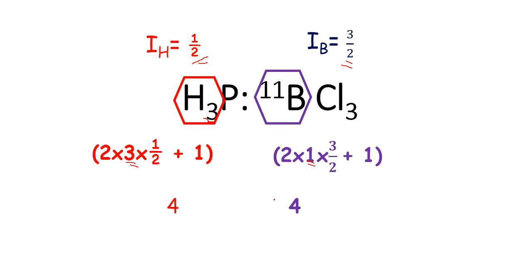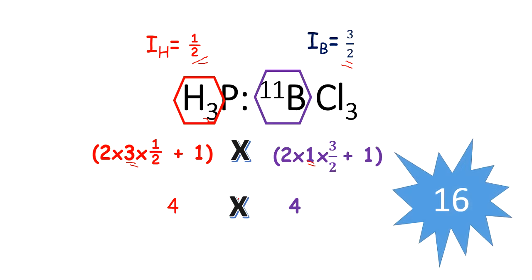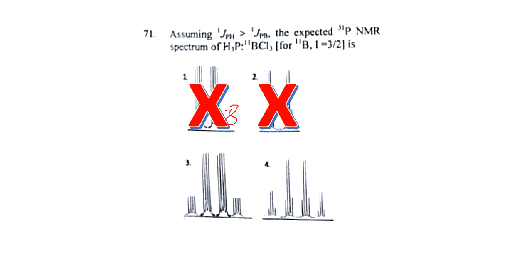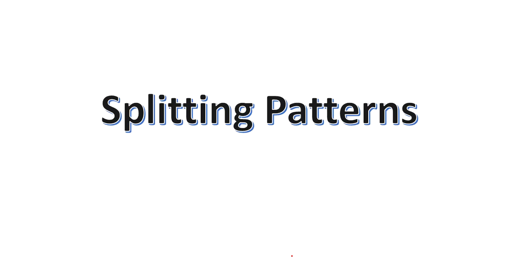To find the total number of lines in the spectrum, we multiply the two results: 4 × 4 = 16. So there are 16 lines in the spectrum. From that we can eliminate two options, as both of those options only have 8 peaks. So from the remaining two options we have to find which is correct.